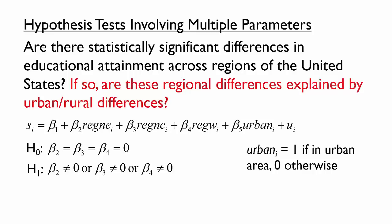Here is the alternative hypothesis that corresponds to the null. Note that we have again written our hypotheses in terms of the population parameters and with equality in the null. However, the statement we are trying to show — that regional differences are explained by urban-rural differences — is in the null, inevitable due to the constraint that the null contains the equalities. Note that one parameter not in our hypothesis is Beta-5. Even though our question mentions urban-rural differences, it is not a question about the urban coefficient itself. To hypothesize that Beta-5 equals 0 would mean that educational attainment is the same in urban and rural areas, holding region constant. Our question is only asking about the region coefficients — the differences across regions when urban versus rural is held constant.